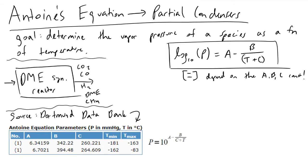The overall goal of Antoine's equation is to model or develop a function that will relate the vapor pressure of some species to a temperature. The equation that people come across time and again is log base 10 of P — where P is the saturation or vapor pressure — equal to some constant A minus B over T plus C.